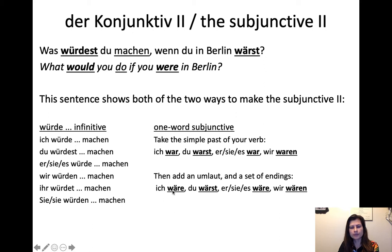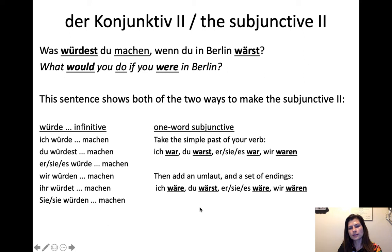Wäre translates as "would be," but sometimes in English you have to render it as "were" in an if-clause. For example: "Das wäre gut" — that would be good. "Ich wäre glücklich" — I would be happy. "Wie wäre es mit einem Kaffee?" — How would it be with a coffee? — a very common way to invite someone for coffee. Wäre contains what in English would be two verbs: "would be."